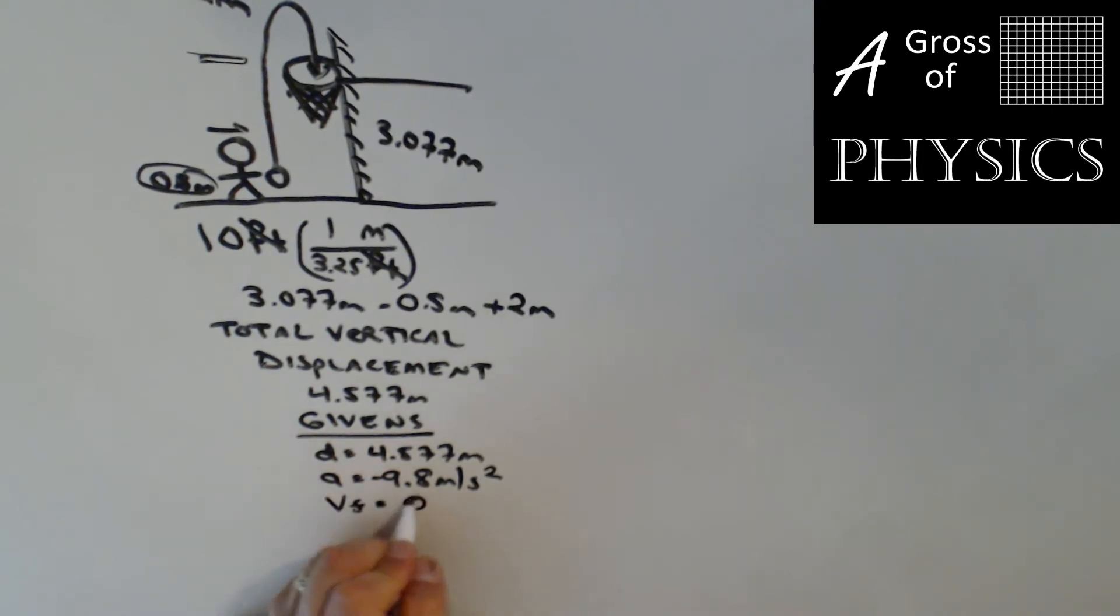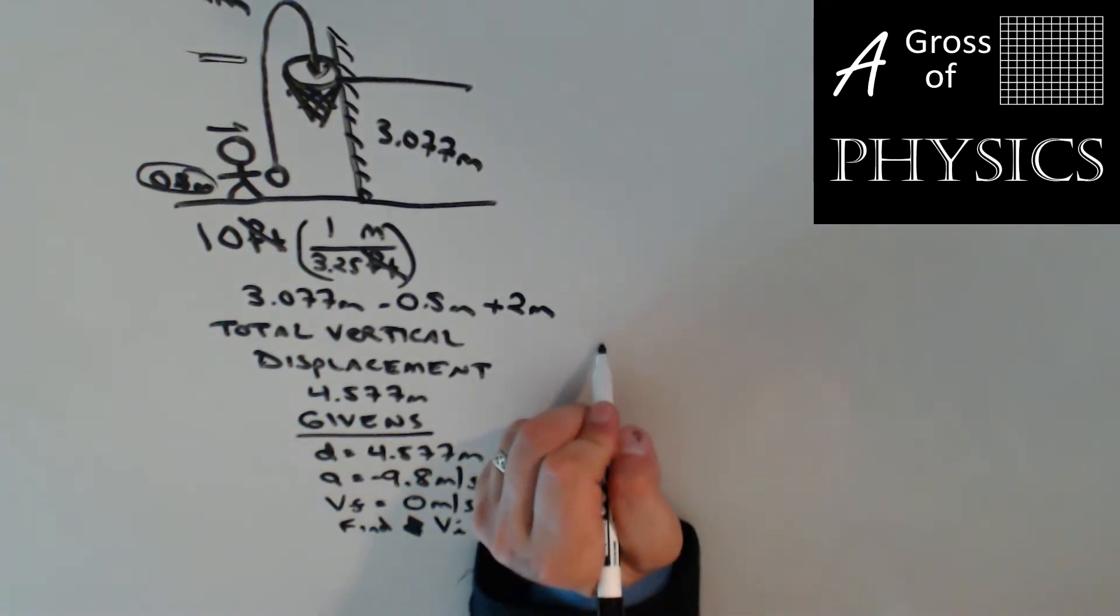My hidden variable: the ball is going to stop at the top, so Vf is 0. And I'm going to find Vi. So I'm going to use equation 5 to do that.